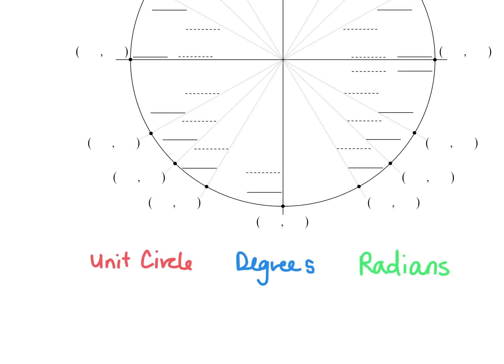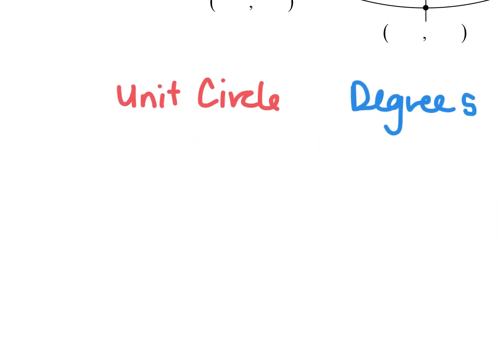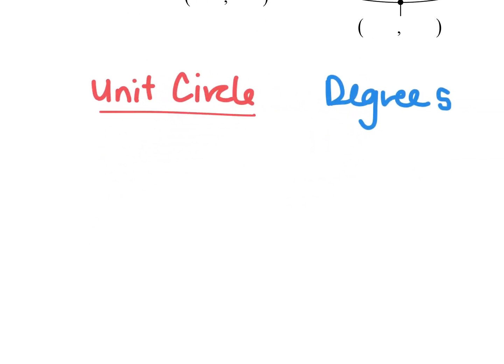So let's start by talking about what the unit circle is. The unit circle, unit means one. So the unit circle means I have a circle with a radius of one and this circle is centered at the origin.